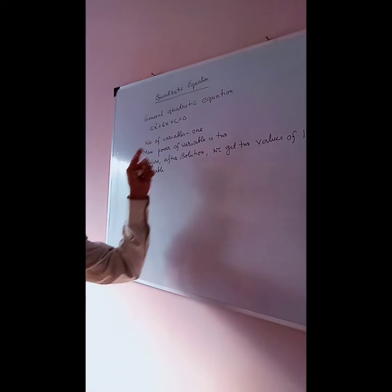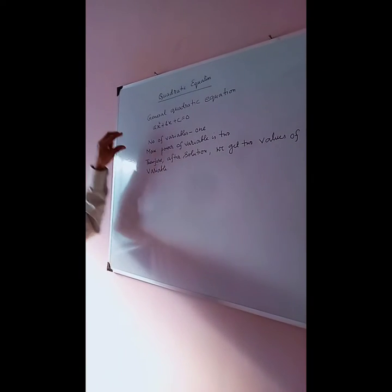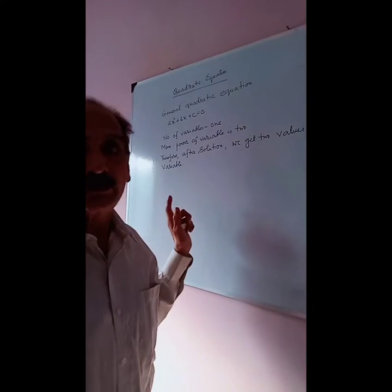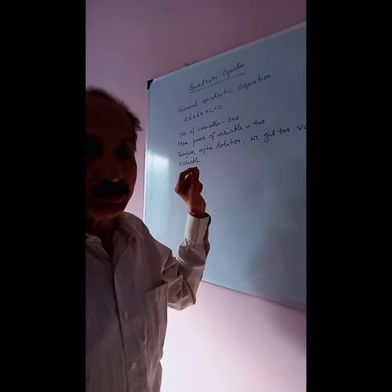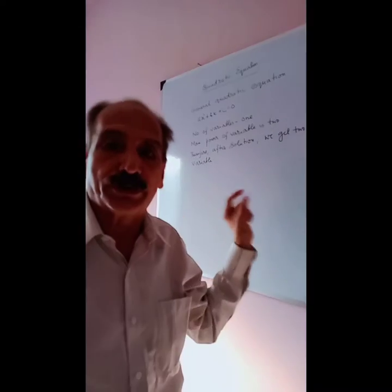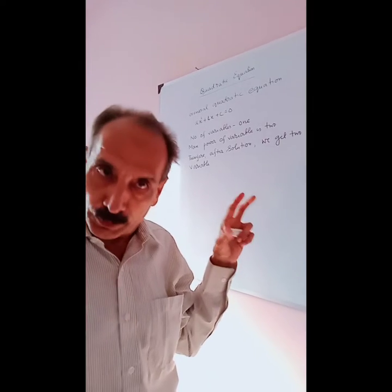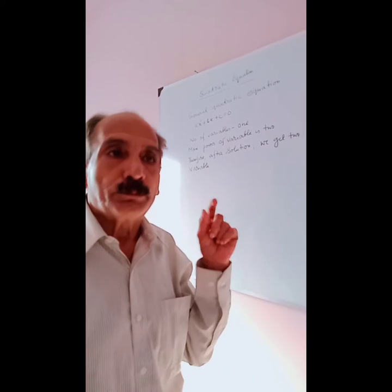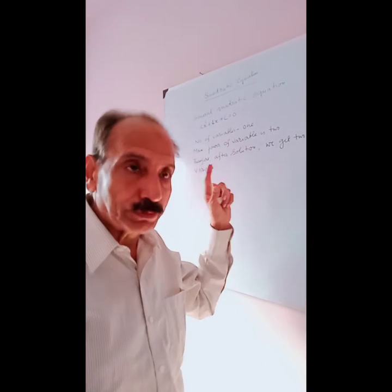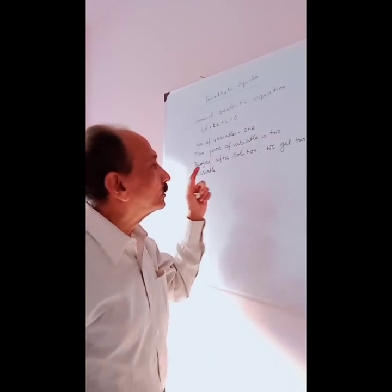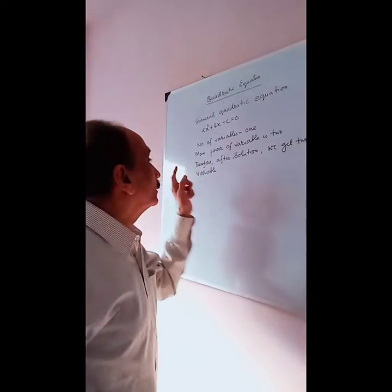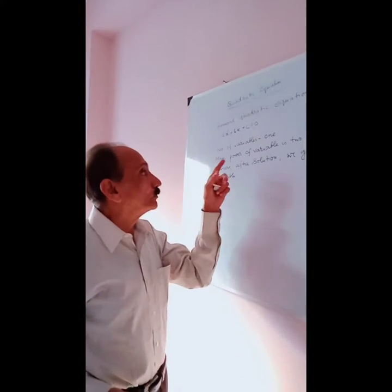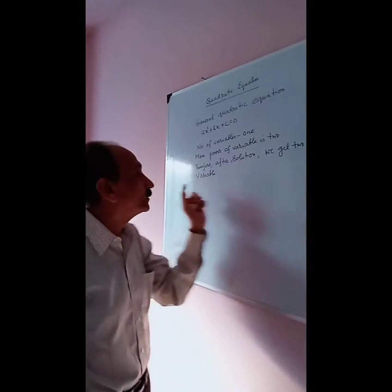The difference between a quadratic equation and a linear equation is: in both equations, the number of variables is 1. But in the case of a quadratic equation, the maximum power is 2, and in the case of a linear equation, the maximum power is 1. So if you solve a linear equation, you get one value of the variable, but if you solve a quadratic equation, you will get two different values of the variable.